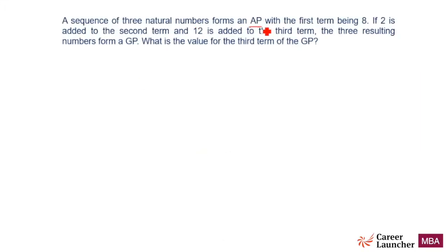A sequence of three natural numbers forms an AP with the first term being 8. If 2 is added to the second term and 12 is added to the third term, the three resulting numbers form a GP. What is the value of the third term of the GP?